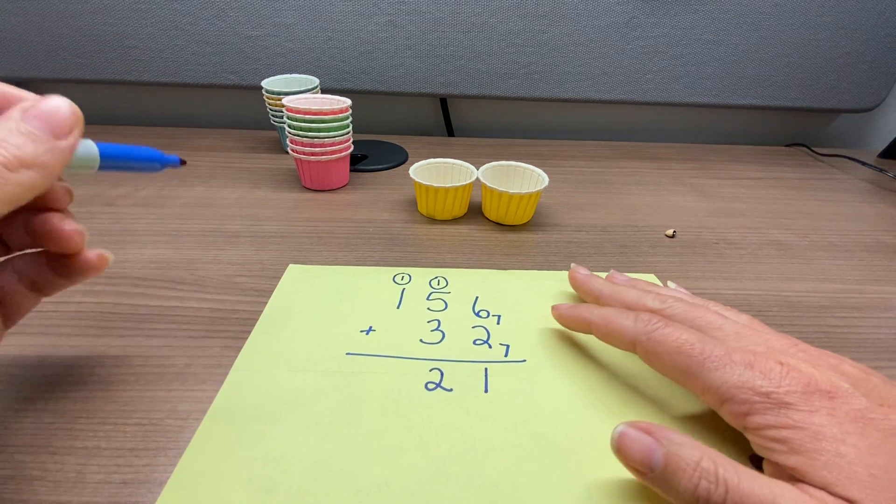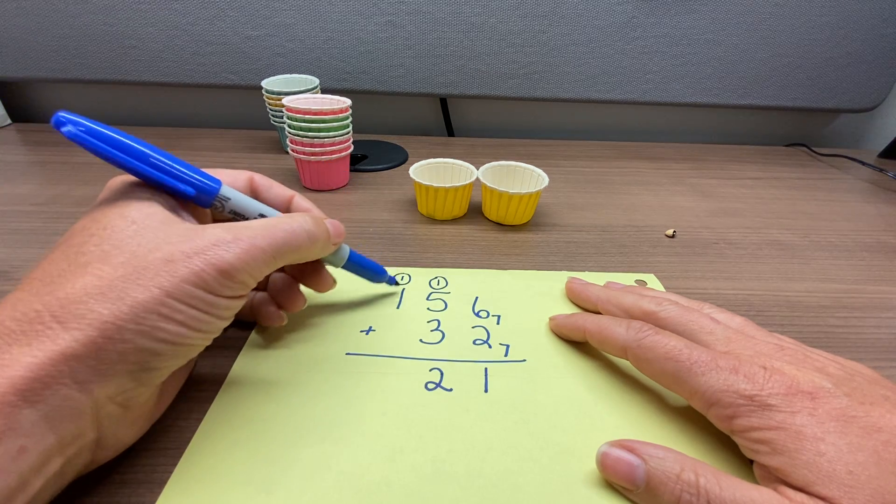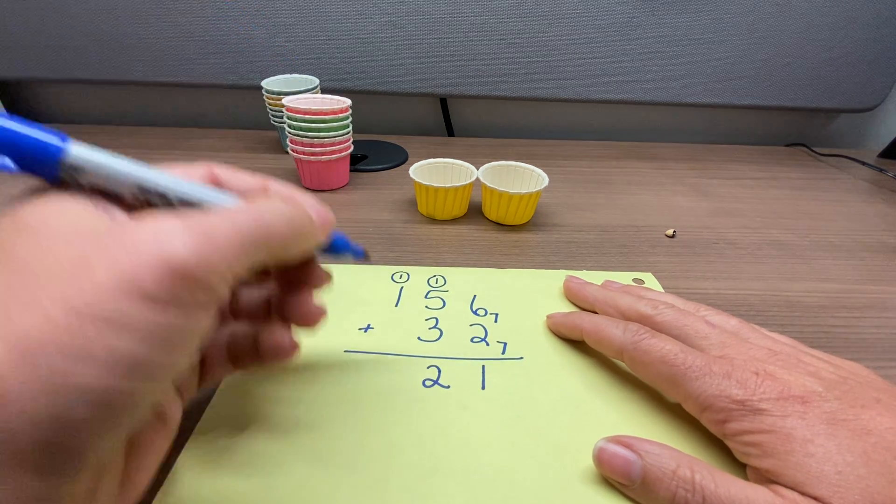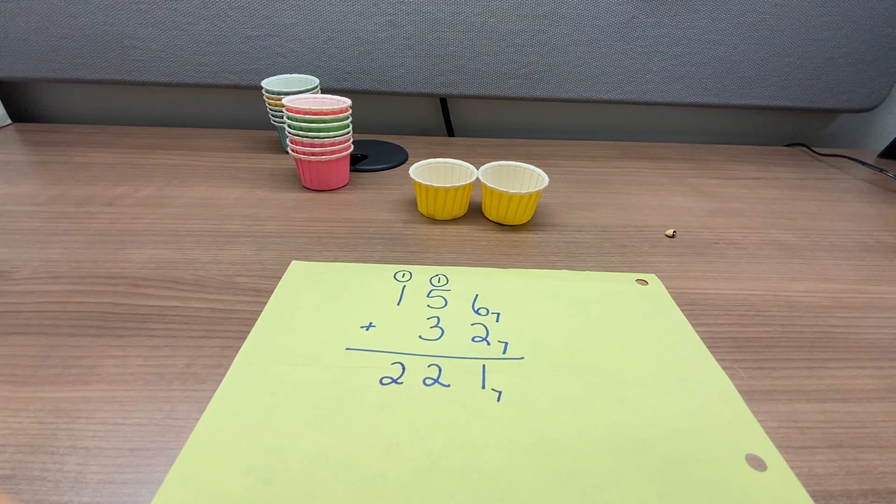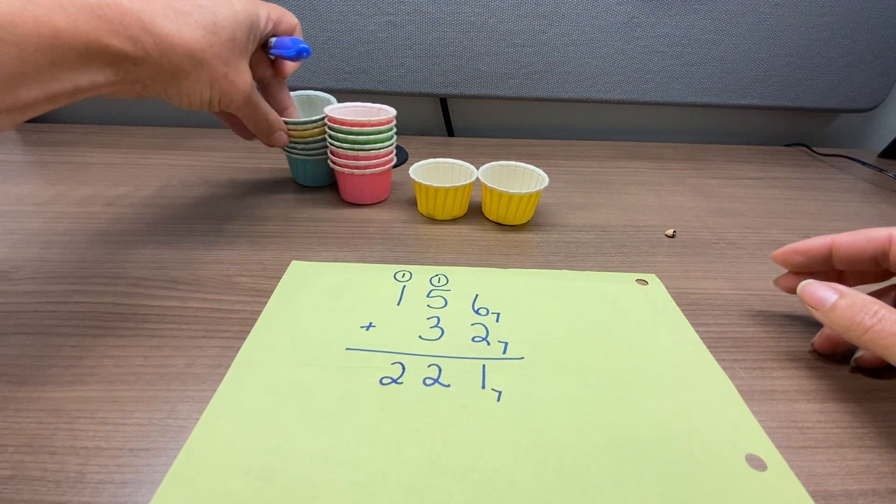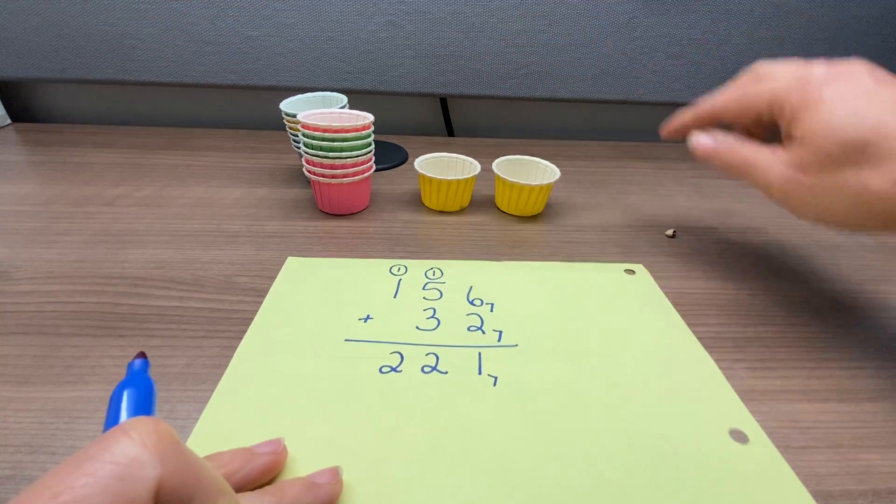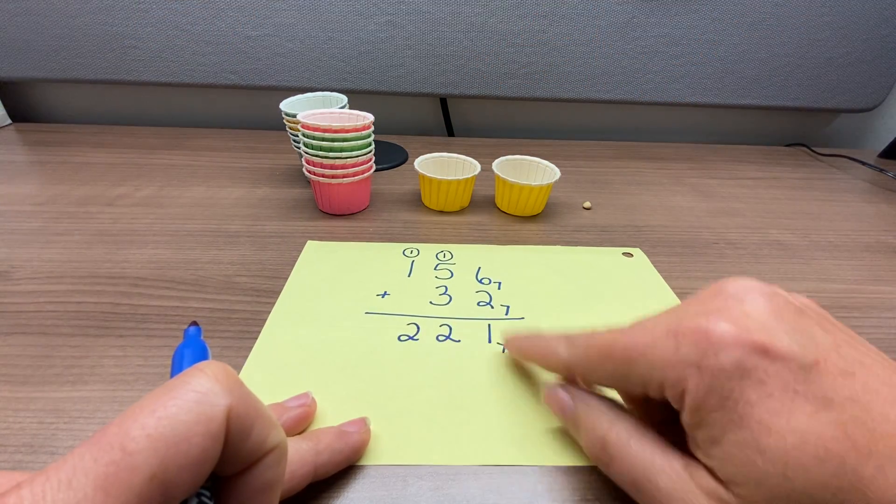And then what we're looking to do is put our 49s together. So we have 2 of those. Record that. And that is our problem. So you can see the place values here. 2 of these, 2 of these, and 1 single. So that's our 2, 2, 1.